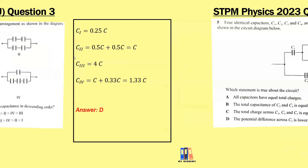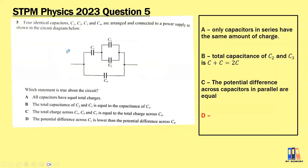Moving to the next question in 2023: four identical capacitors C₁, C₂, C₃, and C₄ are arranged and connected to a power supply as shown in the diagram. We need to determine which statement is true about the circuit. Let's look at each option one by one. Option A — all capacitors have equal total charge: certainly wrong, only capacitors in series have the same charge.